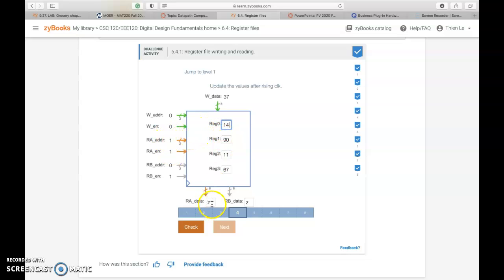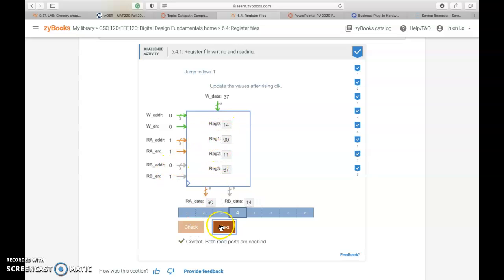And then for RB we see that we are enabling, but we're using register 0 which is 14. We just literally put it in and that's it.